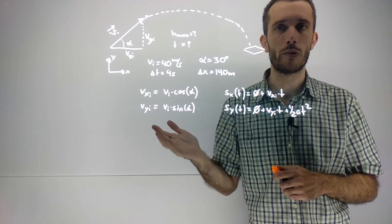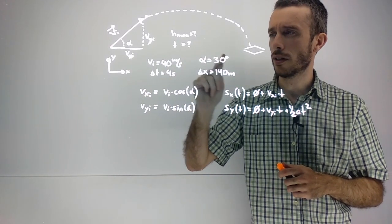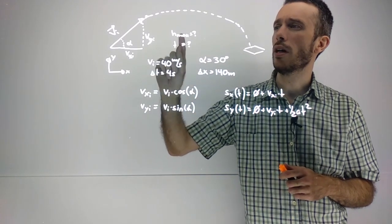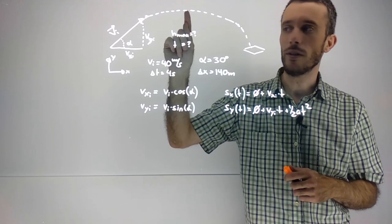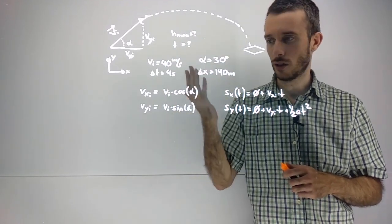Let's do another projectile motion problem. This time we are given the initial velocity, the initial angle, and the initial range, but we're wondering how long it takes until we reach the highest point and how high the highest point actually is.